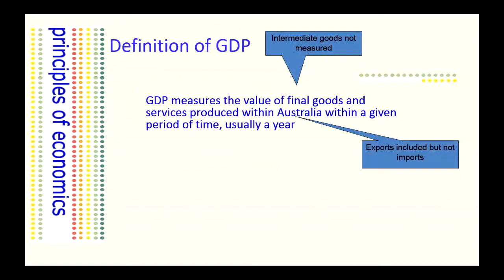So we exclude the intermediate goods if we've valued final goods and services. And because it's within the borders of the country, we have recognised that foreigners buy our goods, so exports will be included. But GDP doesn't measure any imports, so we have to take those away.